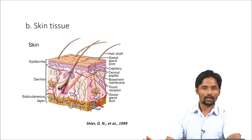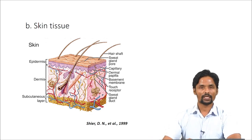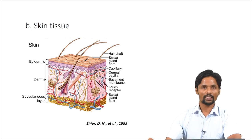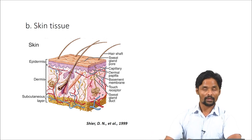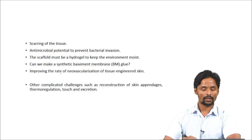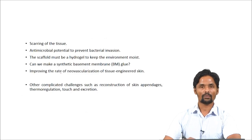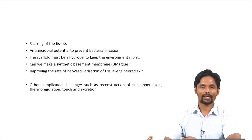Let us go to skin tissue. This is the general structure of skin tissue — the upper epidermal layer followed by the dermal layer. If the skin injury is limited to the epidermal layer, fibroblasts present in the dermal layer migrate towards the epidermal layer, differentiate, and secrete extracellular matrix, thereby filling up the gap. If the skin injury is very deep and the dermal layer is also lost, clinical interventions are necessary. One challenge is scarring of the tissue — fibroblasts secrete collagen in excess of what is required.